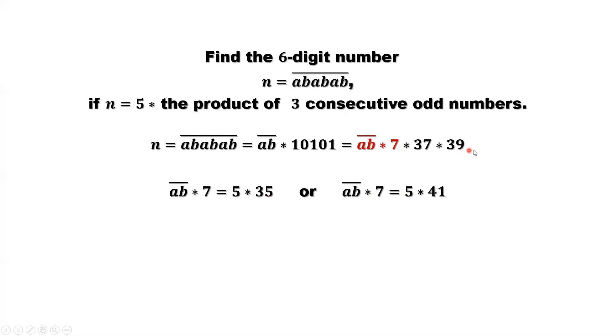This one, 41 here after 37, 39, and 41 to form a three consecutive number group. Only two situations we need to consider. Consider the first situation. If AB times 7 equals 5 times 35, so here we can continue to factor 35 as 5 times 7. So here we can find AB. AB equals 25. This is one solution.